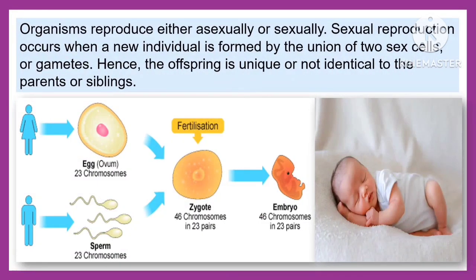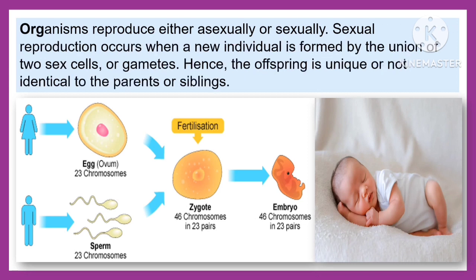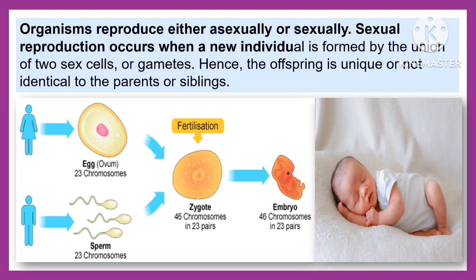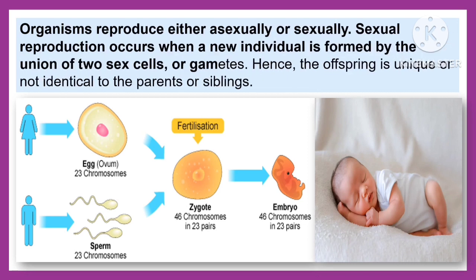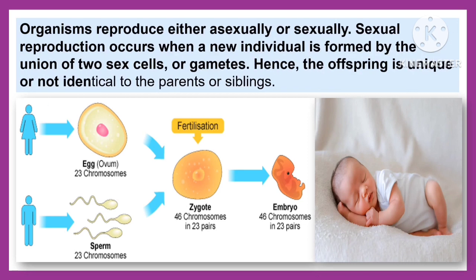Organisms reproduce either sexually or asexually. Sexual reproduction occurs when a new individual is formed by the union of two sex cells or gametes. Hence, the offspring is unique or not identical to the parents or siblings.